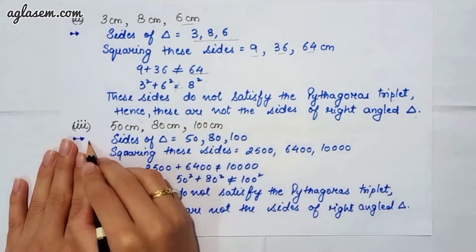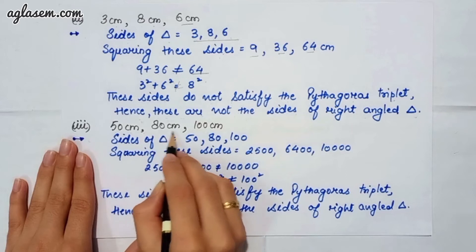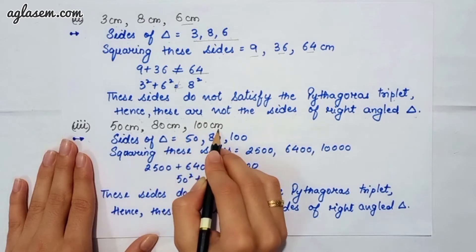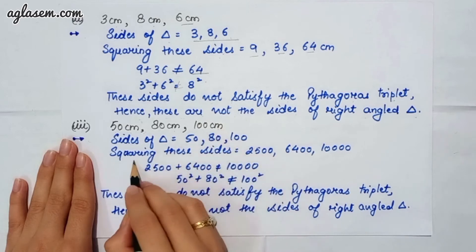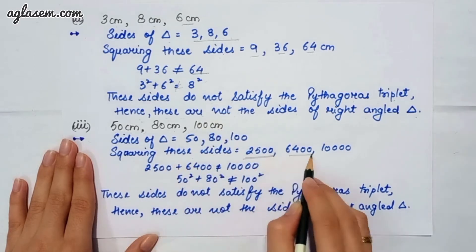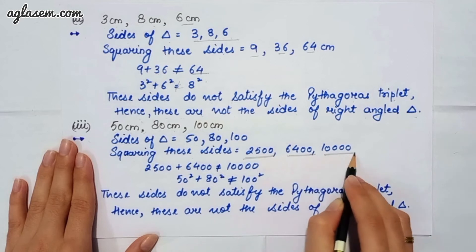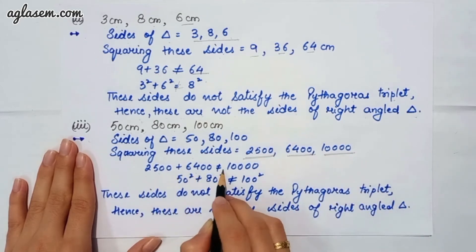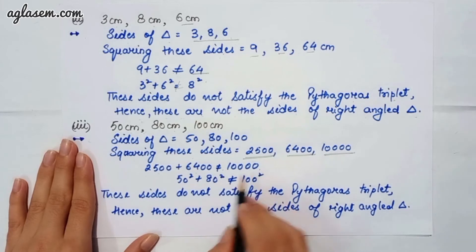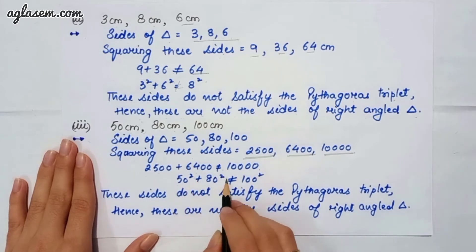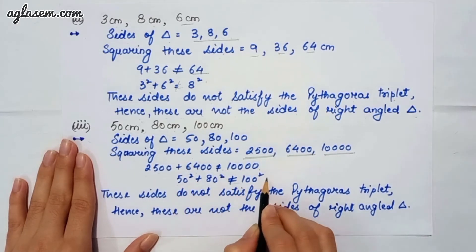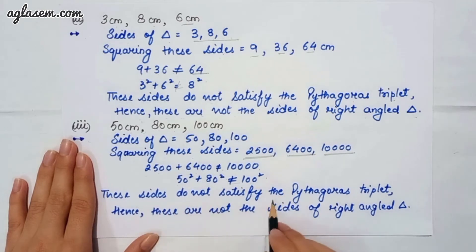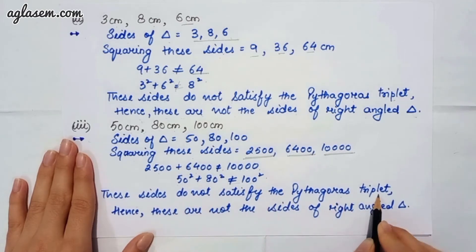The third part says 50 cm, 80 cm and 100 cm. Again, these are the sides of a triangle. Squaring: 50² = 2500, 80² = 6400, 100² = 10000. So, 2500 plus 6400 is not equal to 10000, meaning 50² + 80² ≠ 100². Therefore, these sides do not satisfy the Pythagorean triplet. Hence, these are not the sides of a right angle triangle.